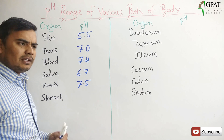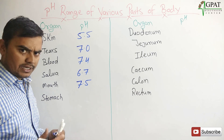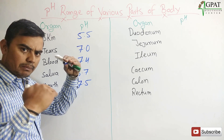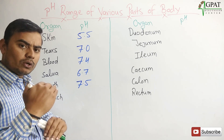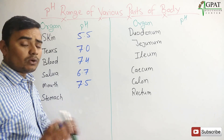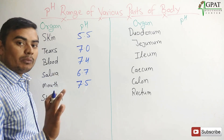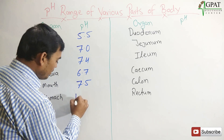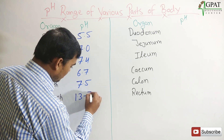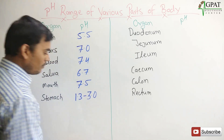Stomach: the pH range in the stomach is different at the upper, middle, and lower levels — all parts have their own different pH. Here I am going to take a common pH of the stomach, and the common pH of the stomach ranges between 1.3 to 3.0.